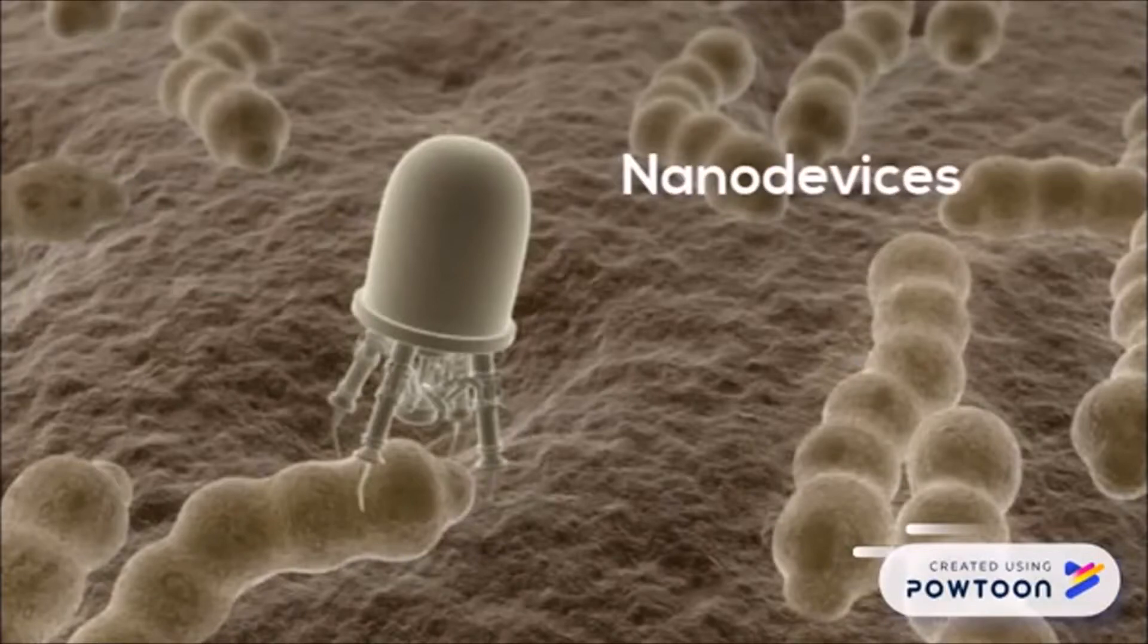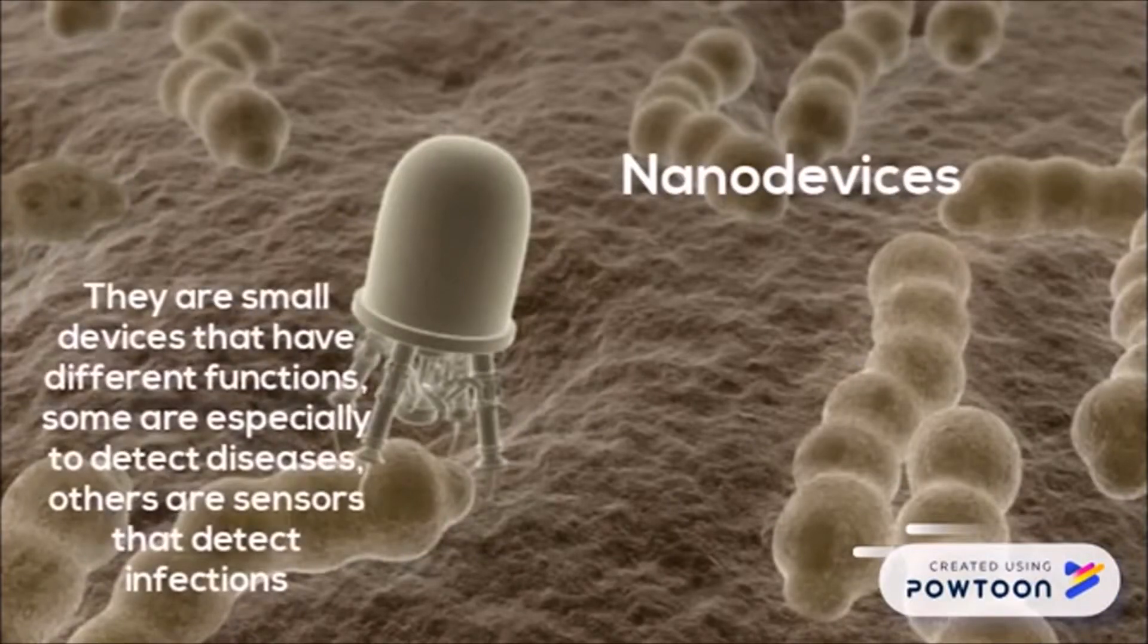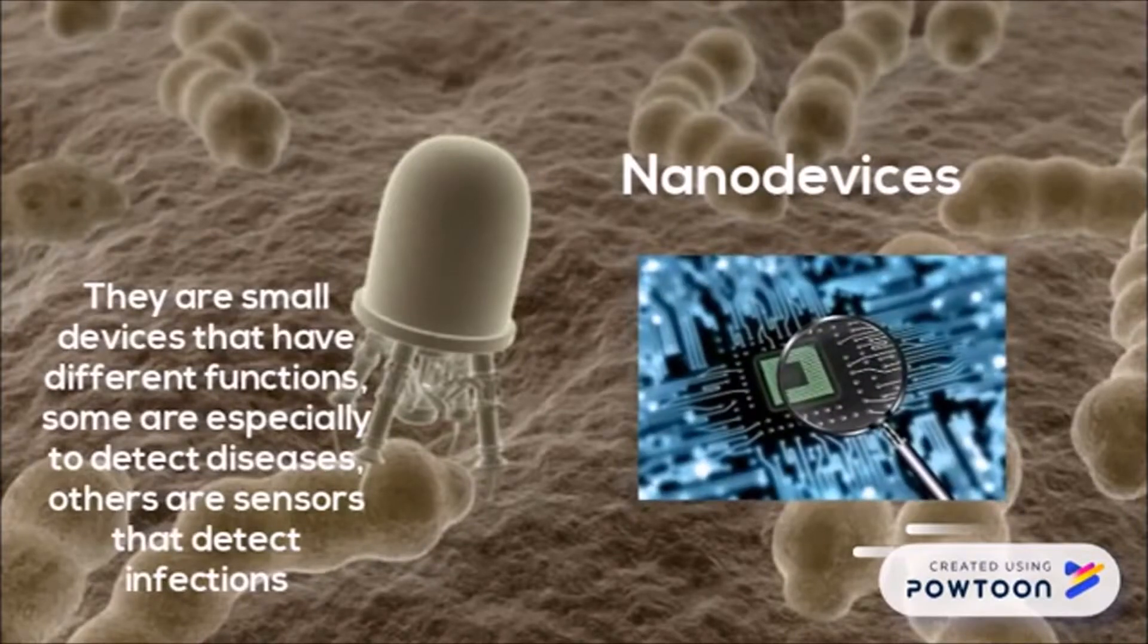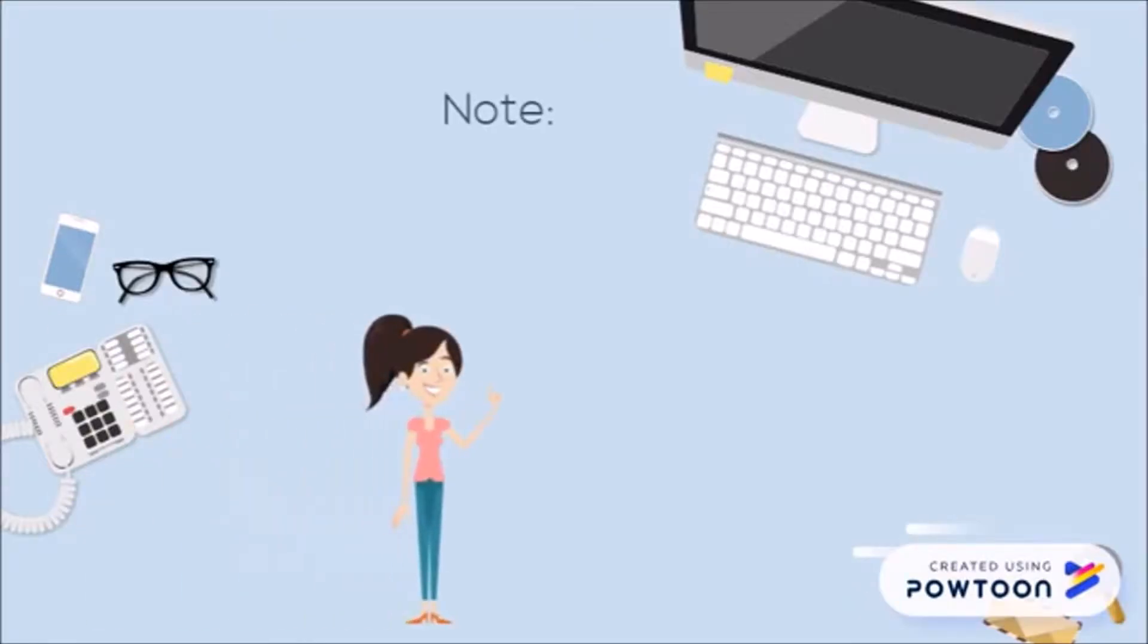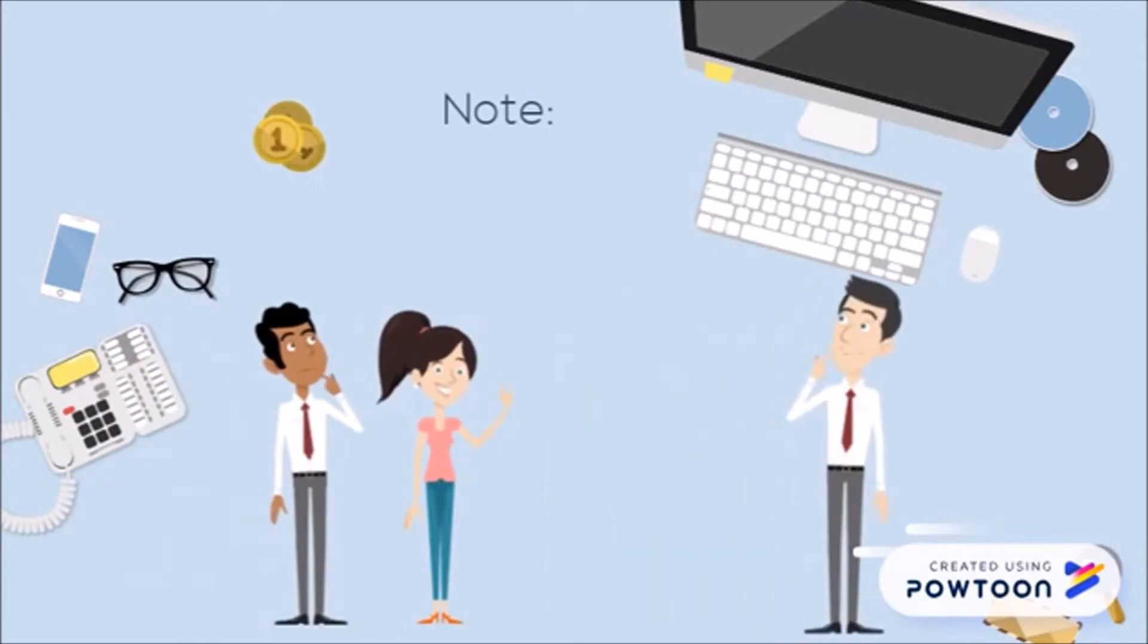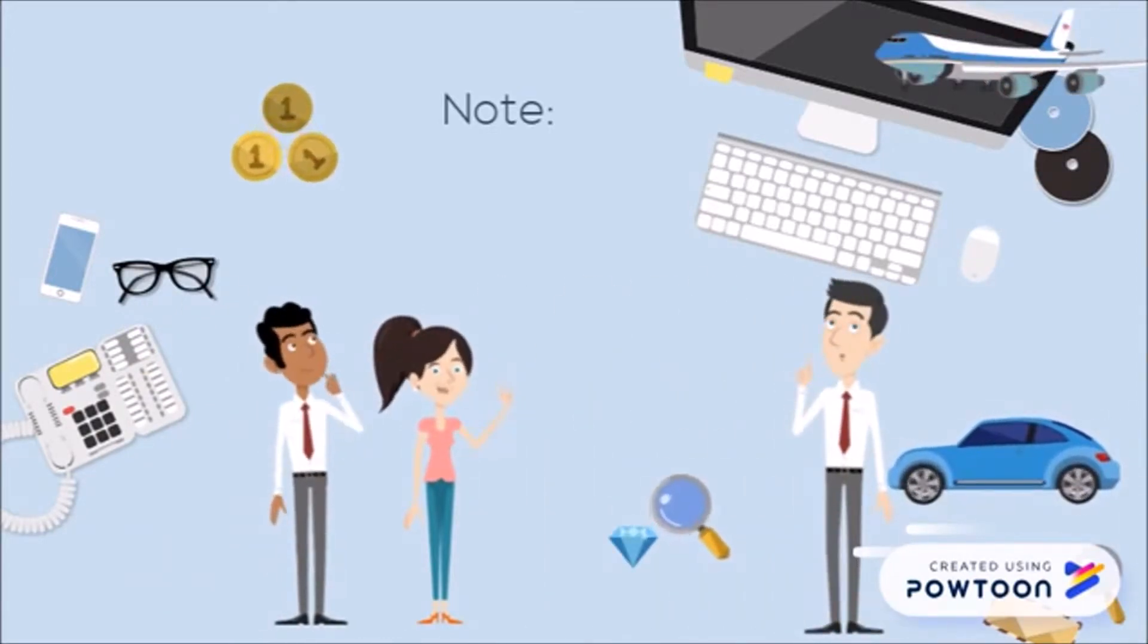Nanodevices are small devices that have different functions. Some are specialized to detect diseases, others are sensors that detect infections, and others are responsible for releasing substances in the body transported by cells. Nanometrology has not yet made the leap to industrial mass production, partly because there is no parallel development of the metrological infrastructure at the nanoscale.